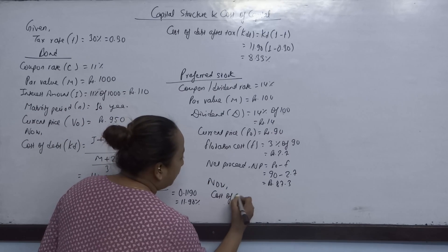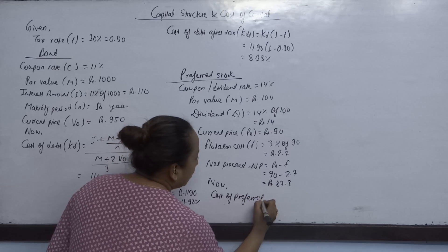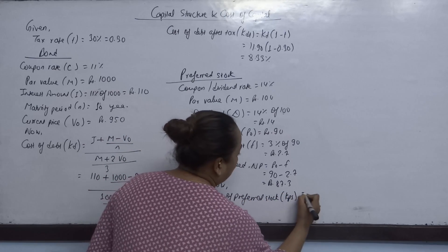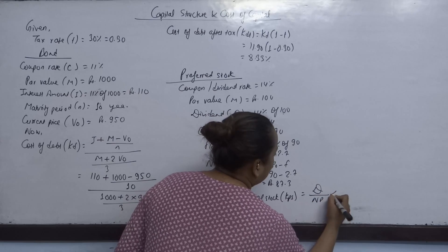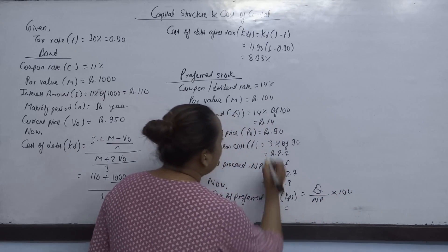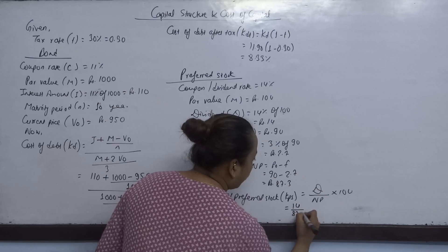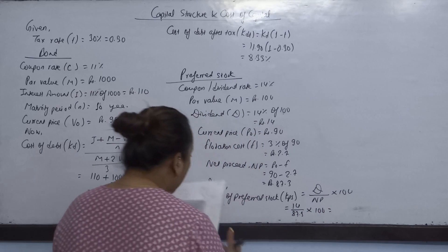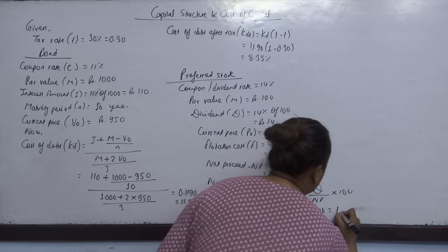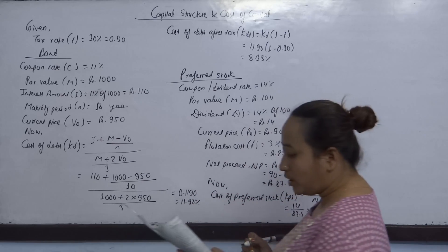Cost of preferred stock: KPS = Dividend / NP. Dividend = 14% of 90 = Rs. 12.6. KPS = 12.6 / 87.3 = 16.04%.